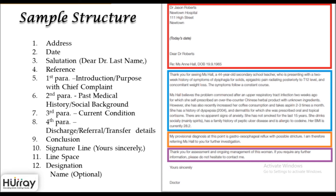Here is a sample structure of the letter you can refer to for practice. At the beginning you have your address, the date, the salutation, and the reference to the patient. You begin with stating the purpose, then mention the medical history and social background, and talk about the current condition. Ensure that you mention what type of letter this is — whether discharge, referral, or transfer. Put the conclusion, then the signature line, followed by your designation. If your name is given, mention your name below the designation.